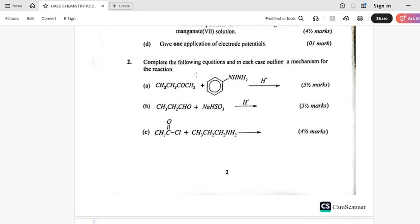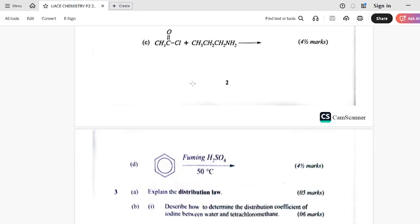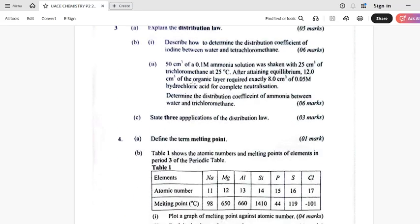Let us move to number two. Number two has been like that, where it was completing the equations and outlining the mechanism for those reactions. That's how it has been looking like. Number three is about the distribution law. What number three has brought on our tables as far as UNEB UACE chemistry paper 2 2025 is concerned.